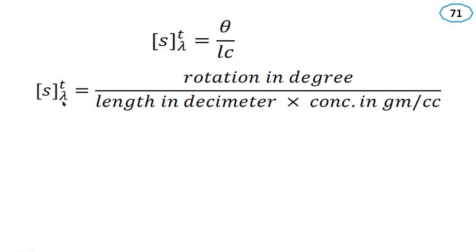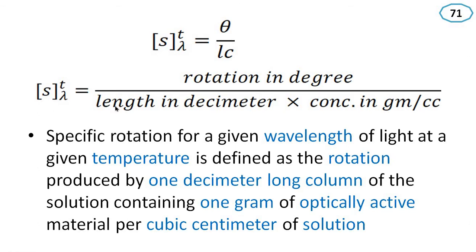Specific rotation S at a given temperature and wavelength is equal to theta divided by L times C — that is, rotation in degrees divided by length in decimeters multiplied by concentration in grams per cubic centimeter. This is the rotation produced by a one decimeter long column of solution containing one gram of optically active material per cubic centimeter of solution.